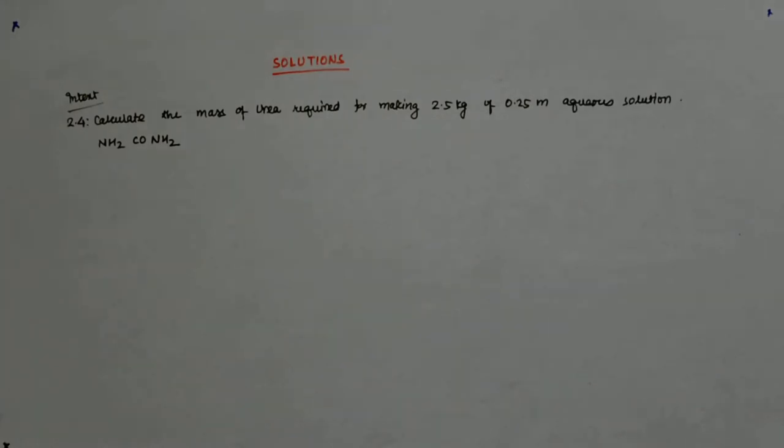Let us try to solve this question. Calculate the mass of urea required for making 2.5 kg of 0.25 molal aqueous solution.